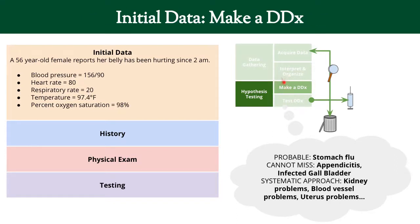Next we're going to make a differential diagnosis. Remember, we had that approach: what's probable? What do most people who come in with belly pain have — maybe the stomach flu. What are things we cannot miss, like appendicitis or an infected gallbladder? Or you could take a systematic approach: what else is in the belly? There are kidneys, blood vessels like the aorta, and the uterus in a woman. Remember, this is a very abbreviated differential for the sake of this video.